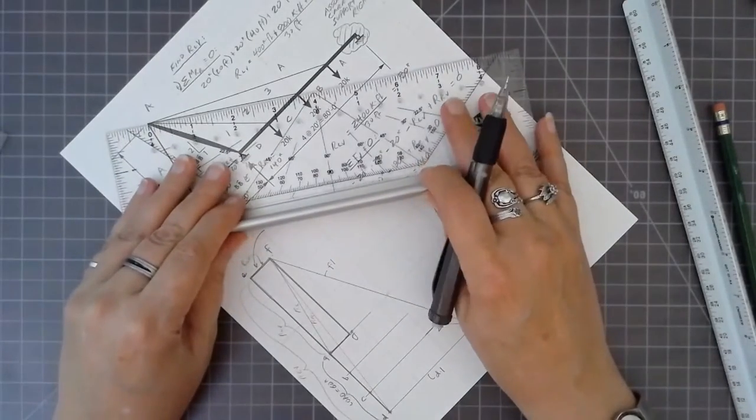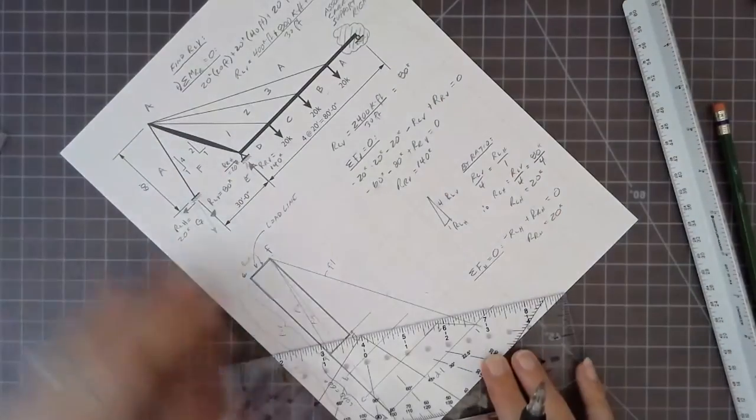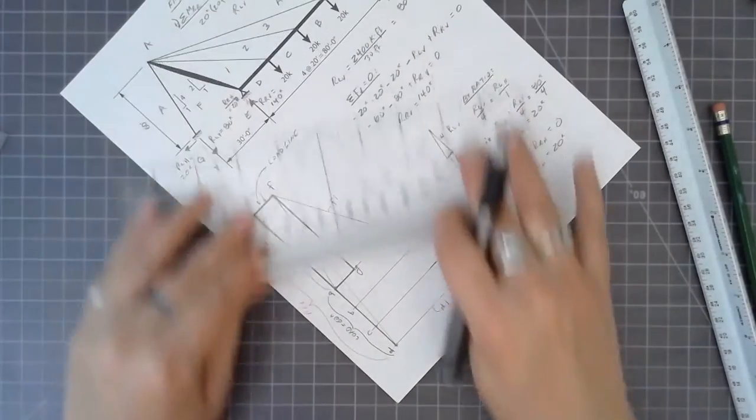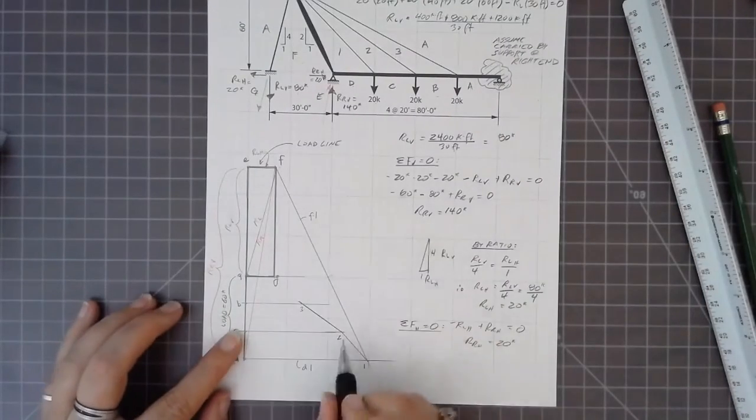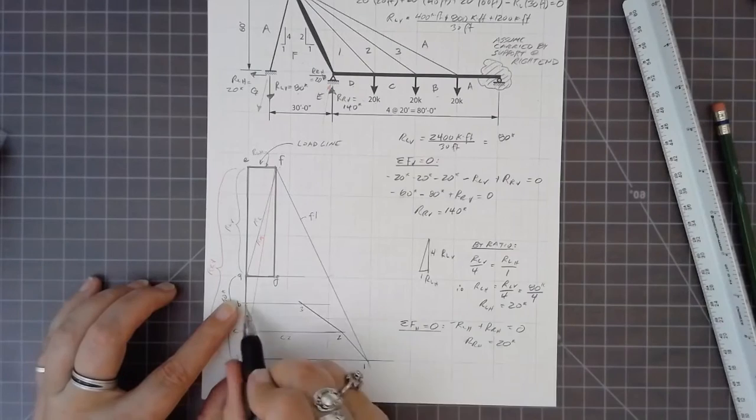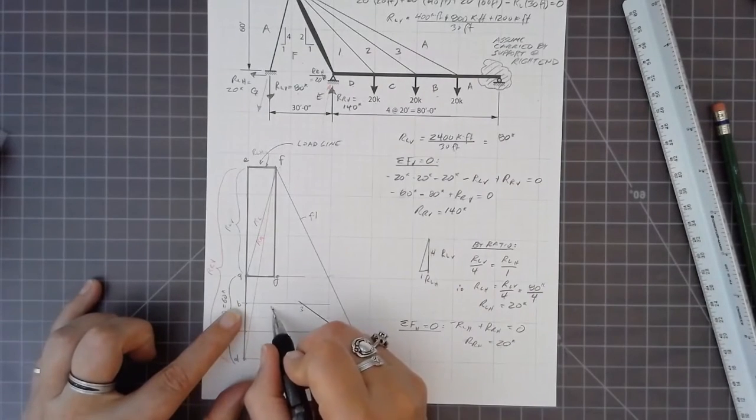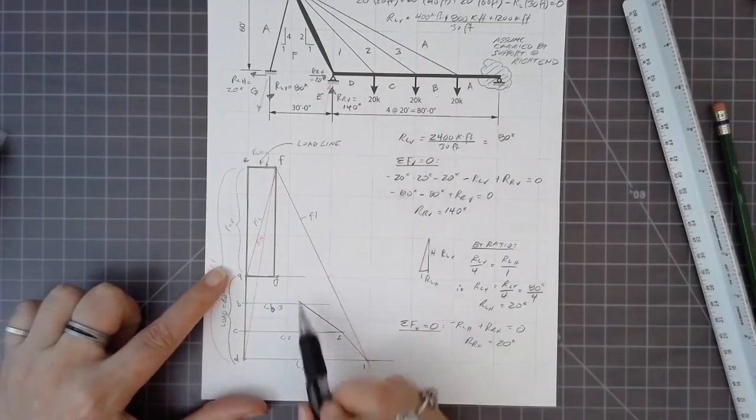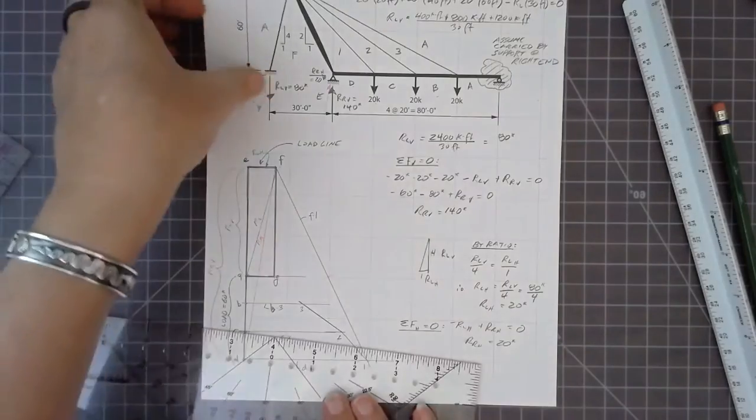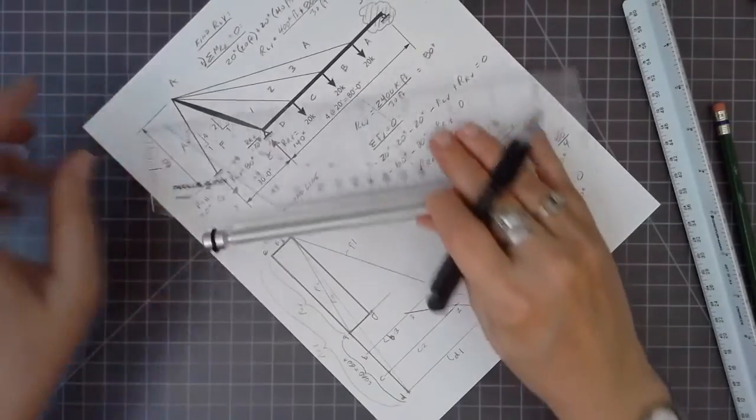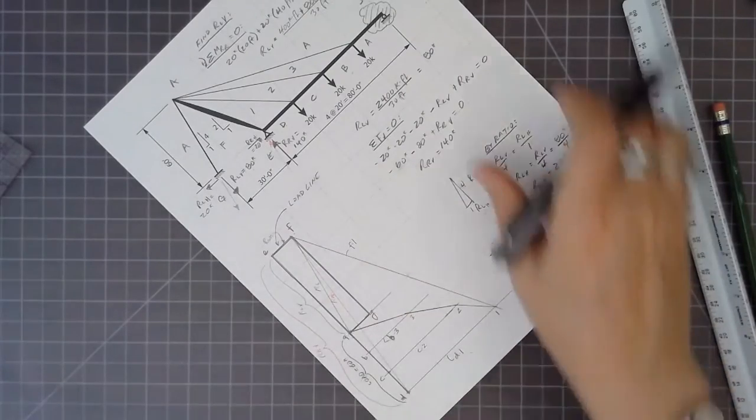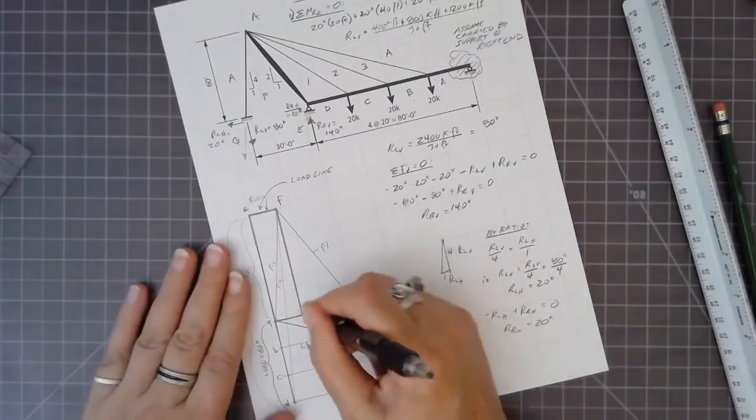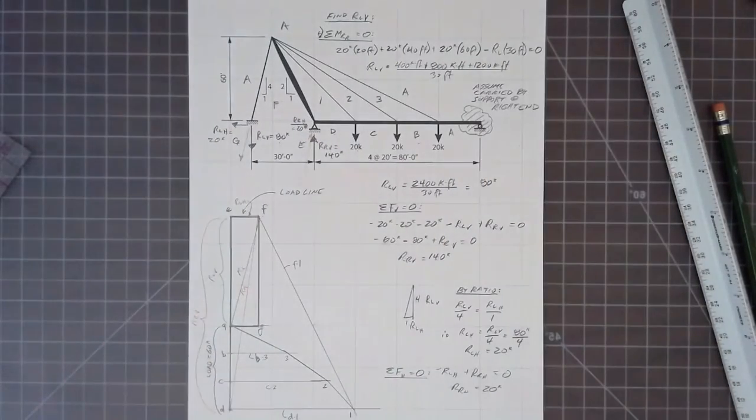2-3 goes from point 2 to B3, and there we have point 3. And then 3A is the last line. And it should match. We always want to go back to zero. So there we go, 3A. We'll erase some of the extra lines.